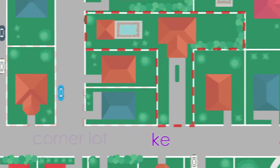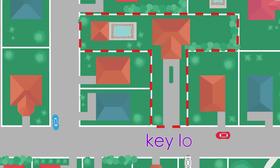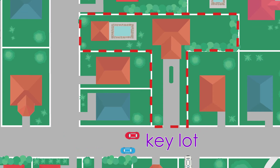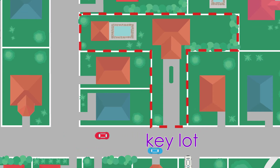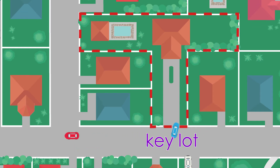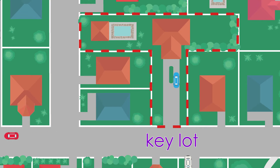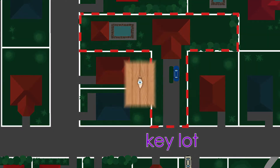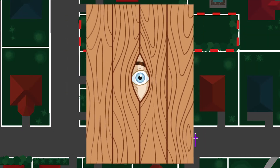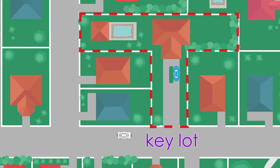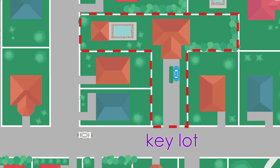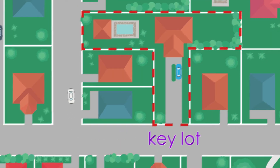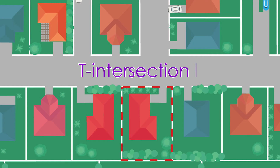Key lot: a lot bordered by three or more lots on the sides and the back. The biggest disadvantage of the key lot is the lack of privacy due to the numerous neighbors abutting all sides of the lot except the frontage.